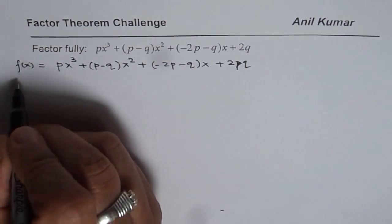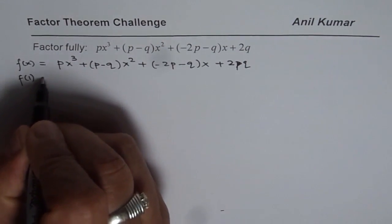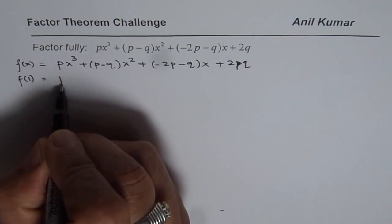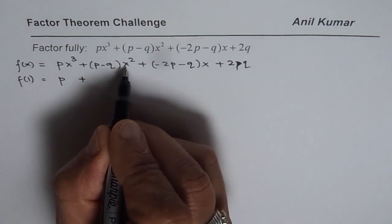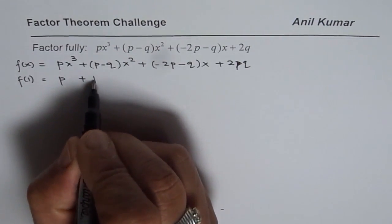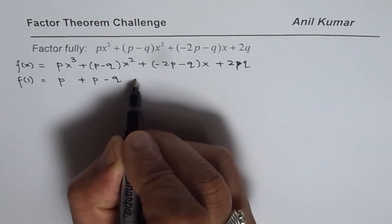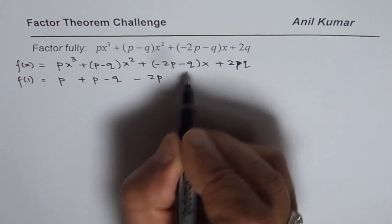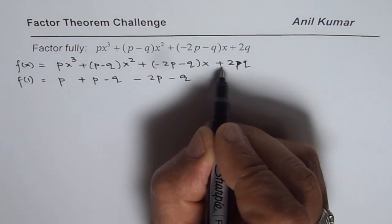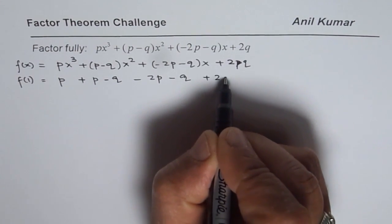let us try what is the value of the function at 1. If I substitute 1 here for x, I get p plus, if I substitute 1, 1 squared is 1, so I get (p-q). For 1 in x, we get -2p-q,